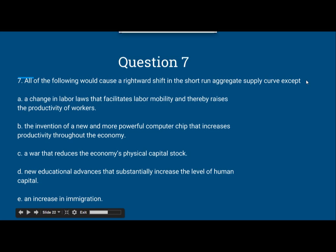Question 7. All of the following would cause a rightward shift in the short-run aggregate supply curve, except: A. A change in labor laws that facilitates labor mobility and thereby raises the productivity of workers. B. The invention of new and more powerful computer chips that increases productivity throughout the economy. C. A war that reduces the economy's physical capital stock. D. New educational advances that substantially increases the level of human capital. E. An increase in immigration.